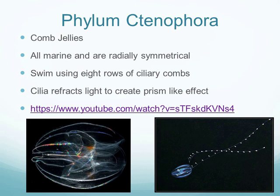Ctenophores are comb jellies. Recent genetic studies suggest they are actually simpler than jellyfish and belong between sponges and jellyfish on the phylogenetic tree — though older textbooks place them after jellyfish. Ctenophores are generally deep-water, entirely marine species with radial symmetry.